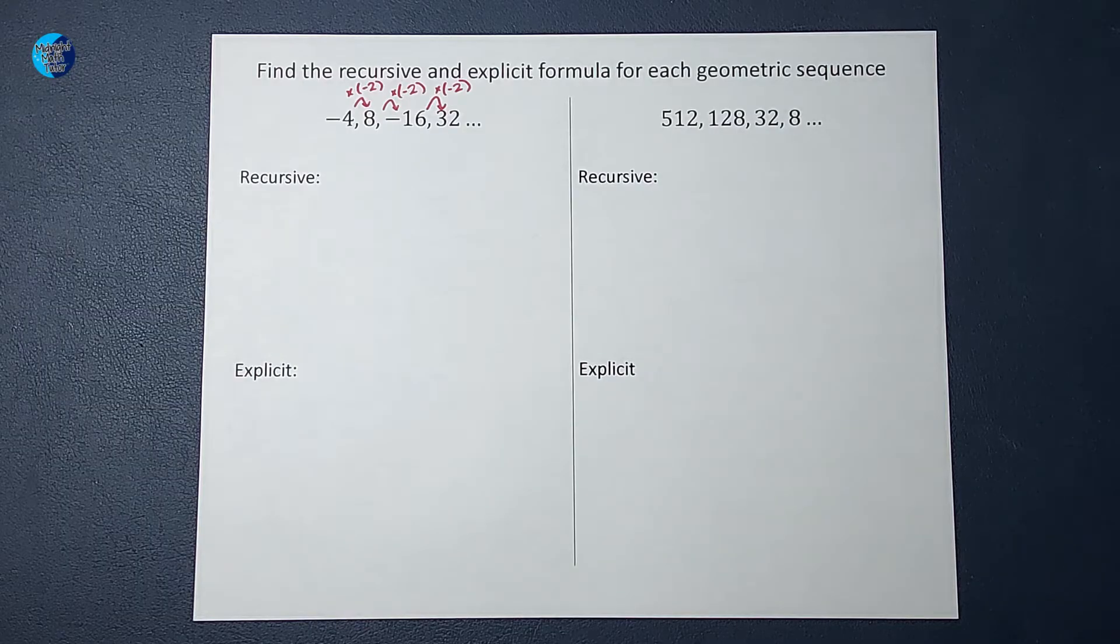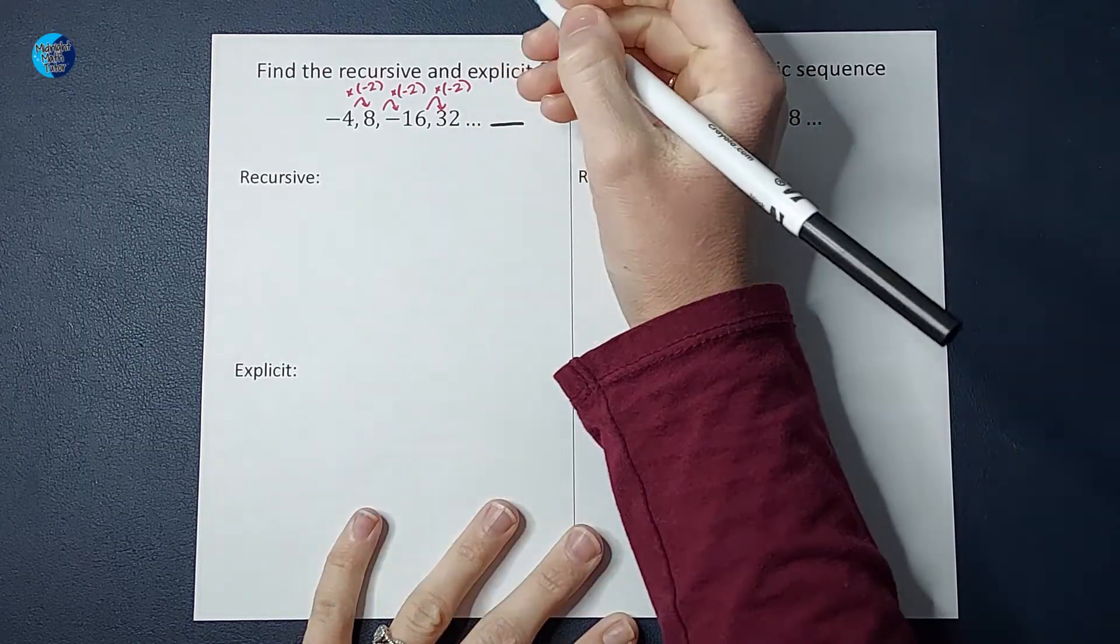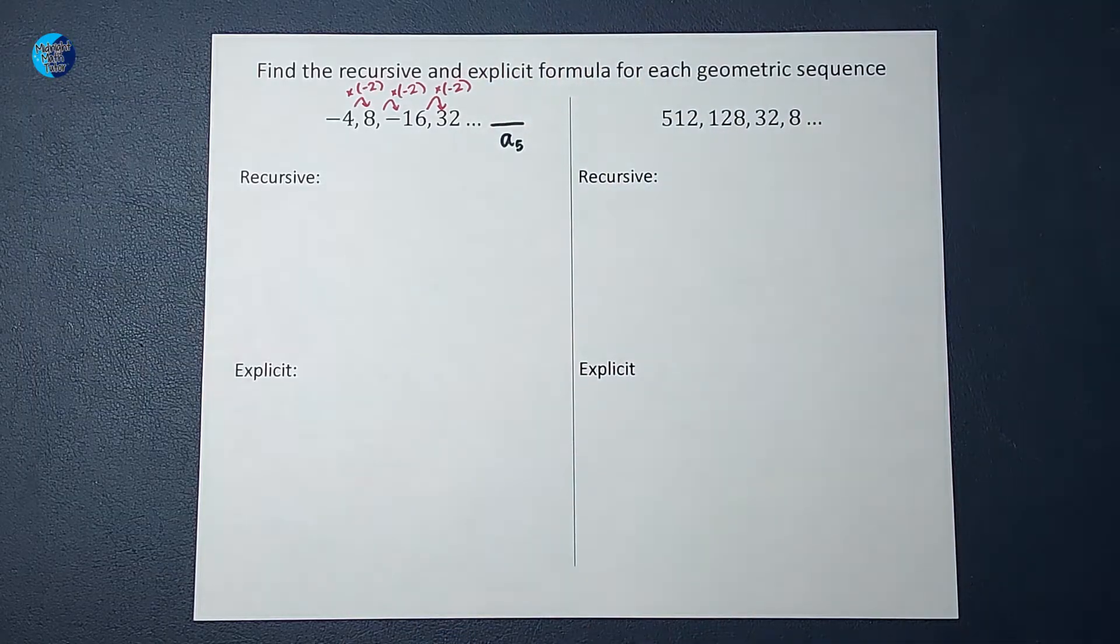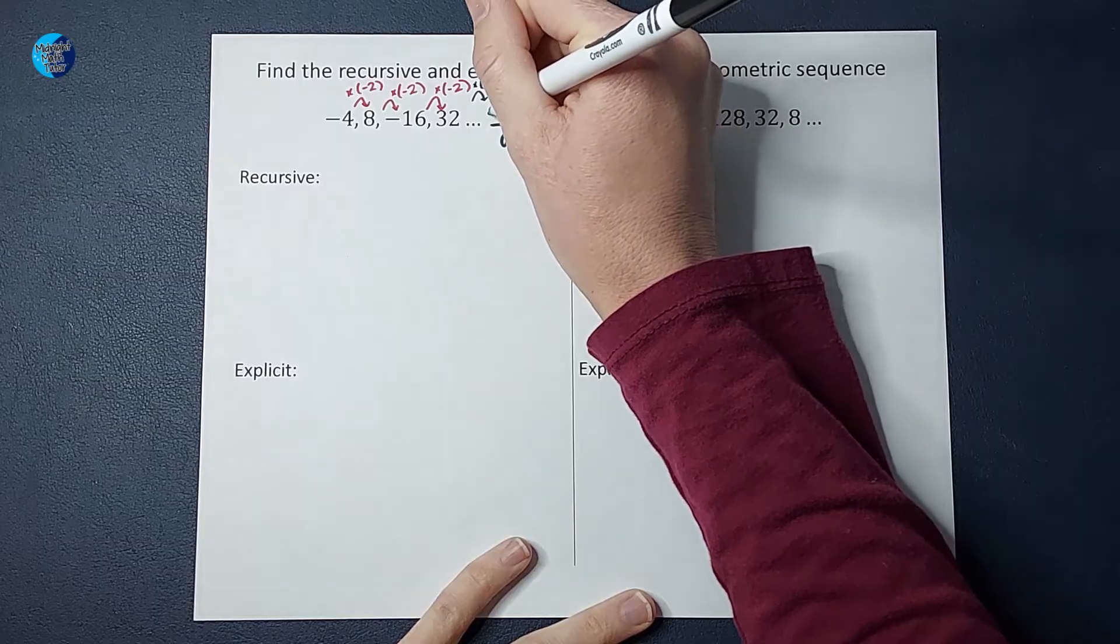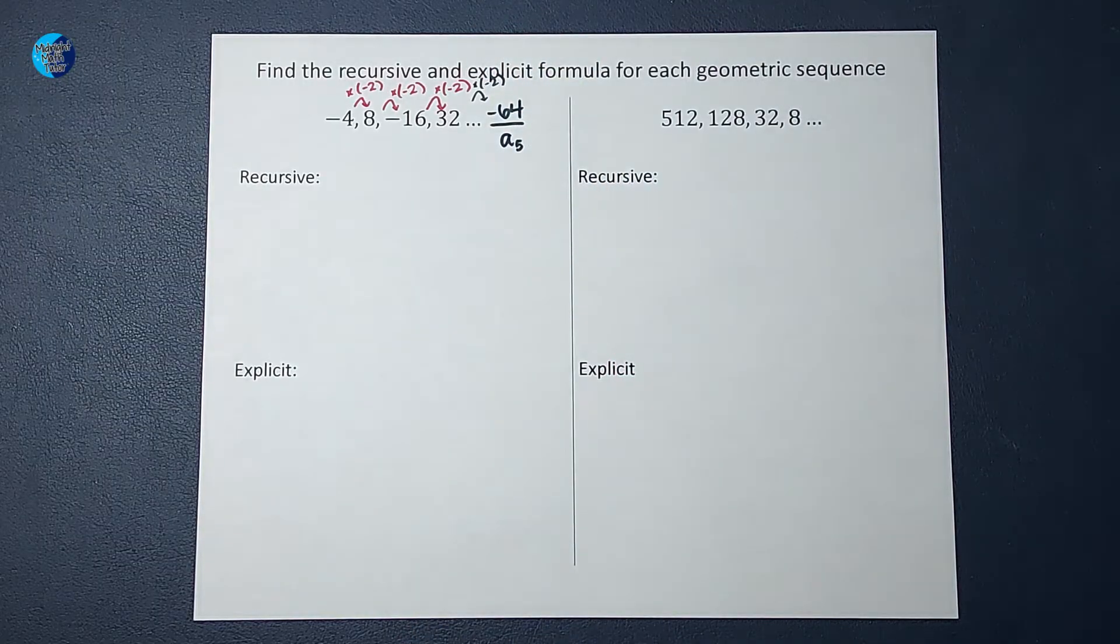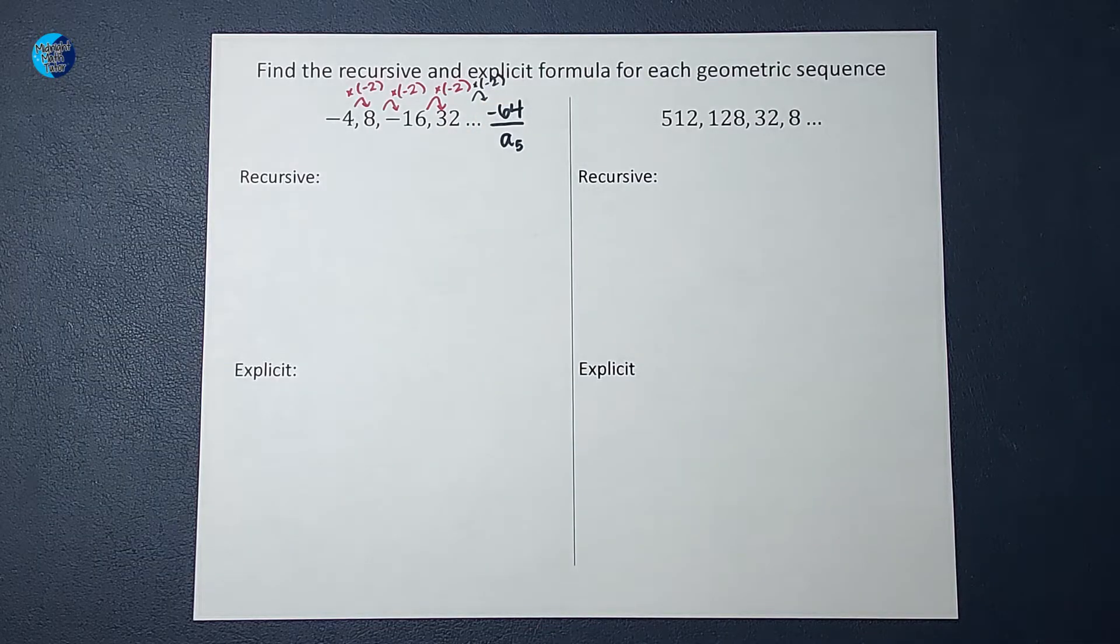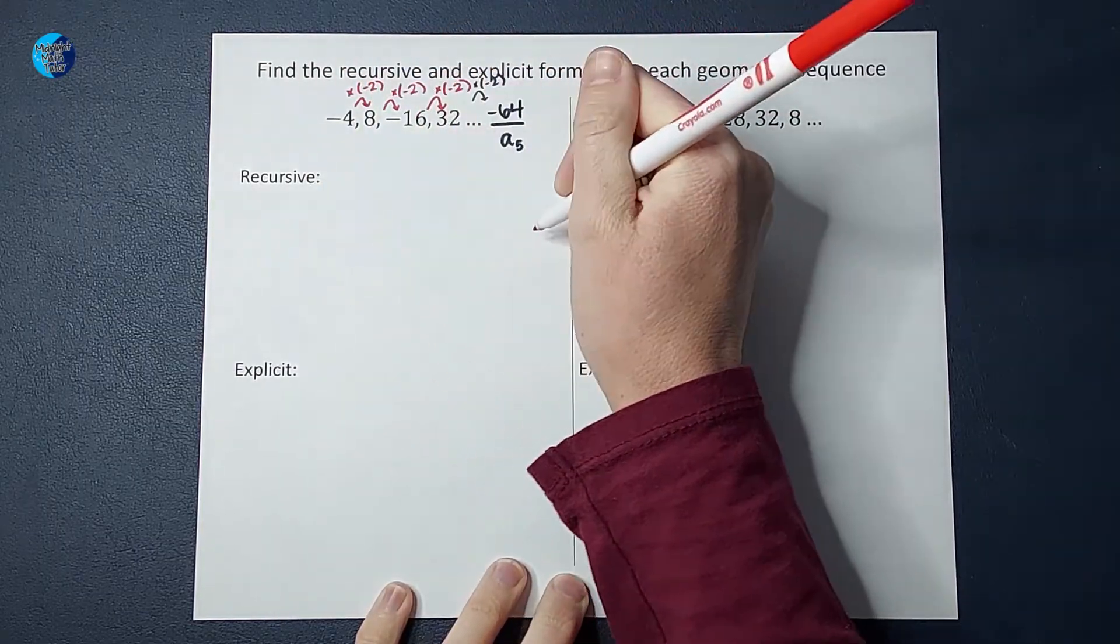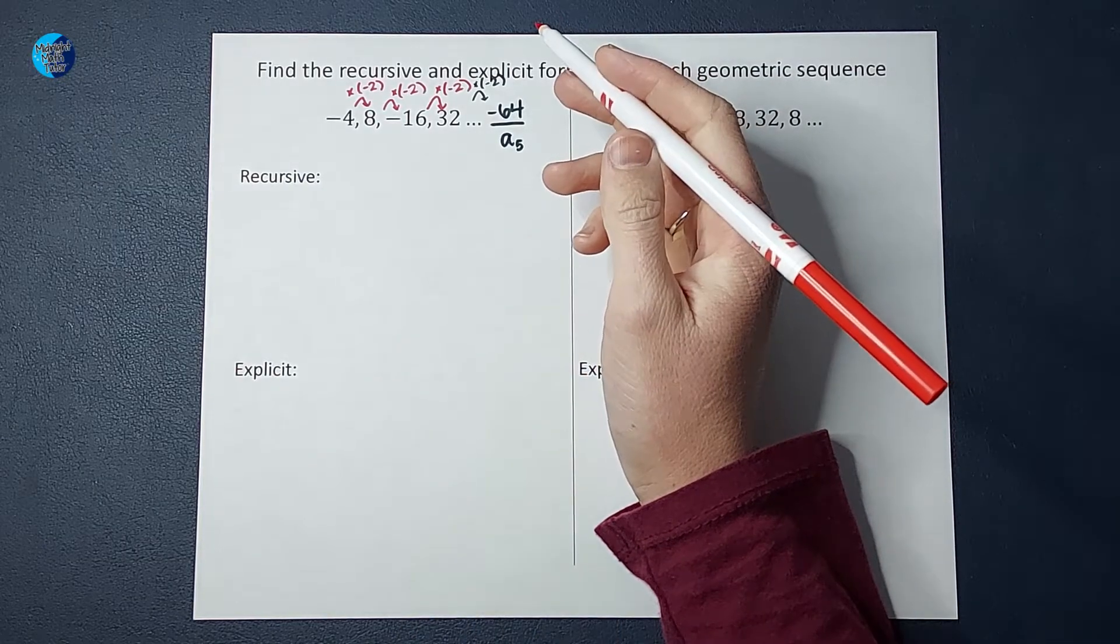I want us to pretend for a second that we are trying to find the next term in this sequence, the fifth term, or A sub five. If I just follow this pattern, I'm going to multiply by another negative two to get negative 64. But how do I tell someone else to do that? To find the fifth term, I took the one before it, the fourth term, and I multiplied by a negative two. If this were an English class, I could just write that out, but your math teacher would say that's not correct.